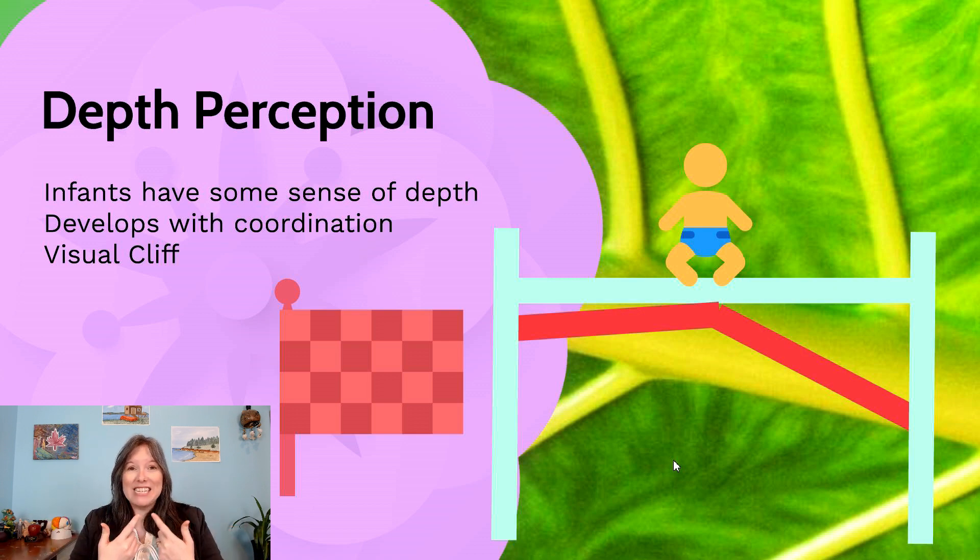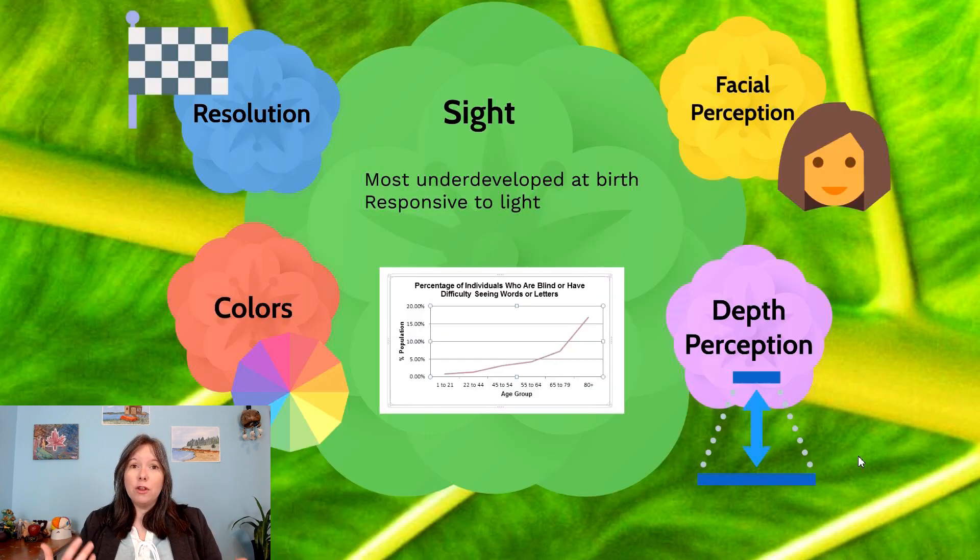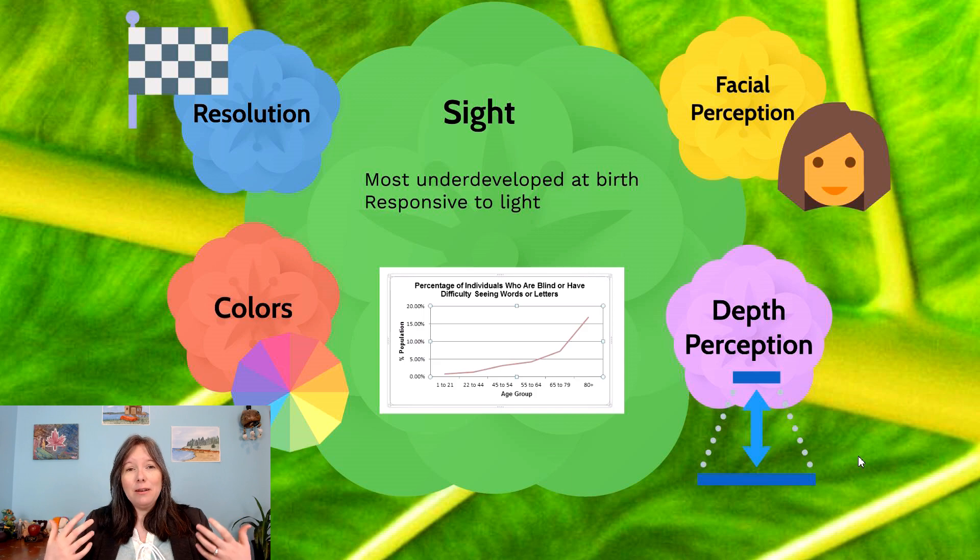But if the parent has a neutral or sad or shocked expression, the infant will only crawl to the shallow end and not to the steep end. So although our sense of sight is the least developed at birth, it changes rapidly in the first year of life and becomes our most advanced sense throughout our lifespan.